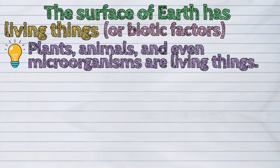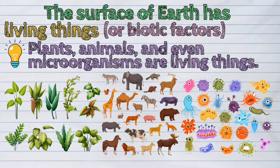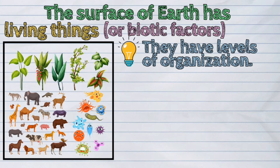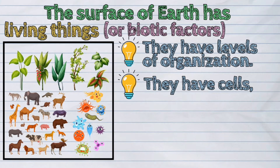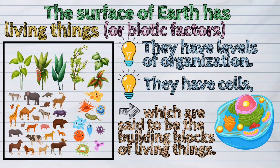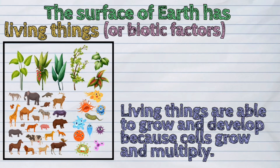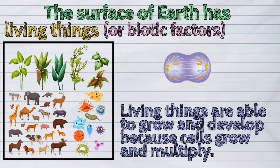Plants, animals, and even microorganisms are living things. They have levels of organization. Living things have cells, which are said to be the building blocks of living things. Living things are able to grow and develop because cells grow and multiply.